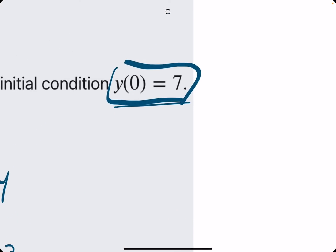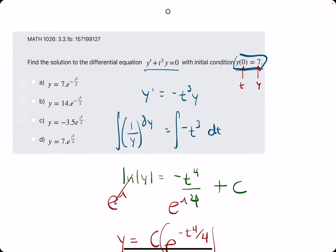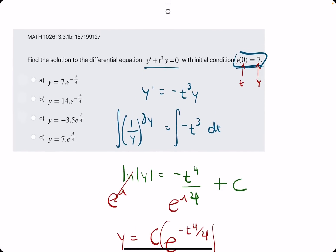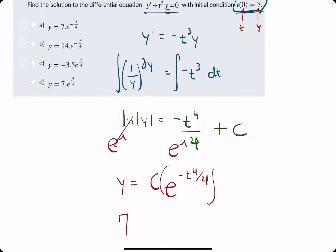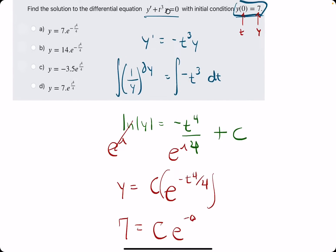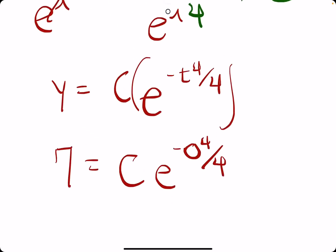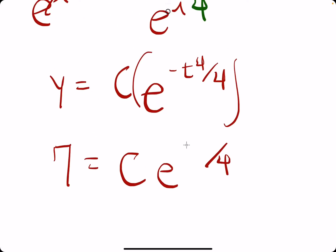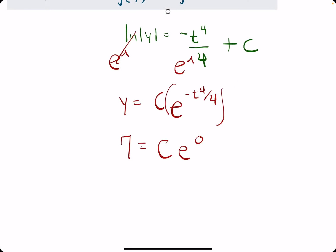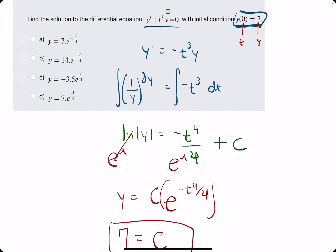Now, the idea is to use this initial condition. They are giving us a t value and a y value respectively. So we're just going to plug those in to this function. So we'll have seven equals c e to the negative zero to the fourth over four. Really, zero to the fourth, just zero over four is just zero. e to the zero is one. Anything raised to the zero power is one. So it leaves us with just c times one equals seven or c is equal to seven.